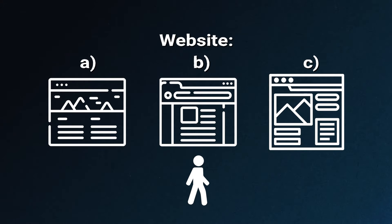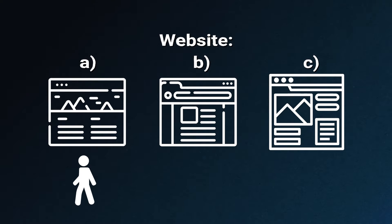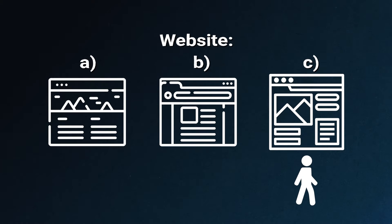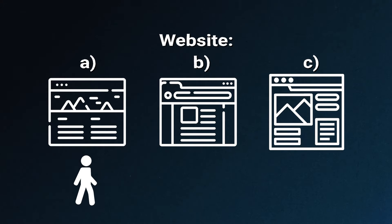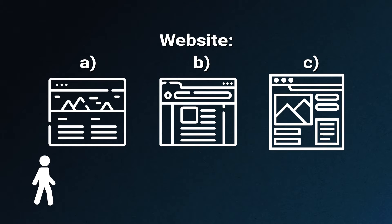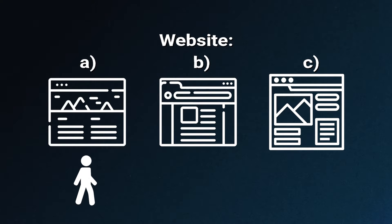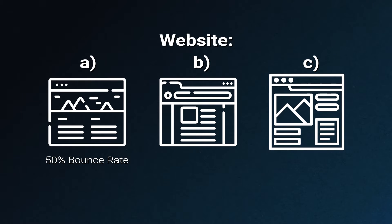Let's continue with our example. On Tuesday, a visitor landed on page B, then went to page A, then page C, and exited the website. On Wednesday, another session came in where the visitor visited page A and then exited the website. So what is the bounce rate for the different pages? Page A had two entrances — Monday and Wednesday — and only the Wednesday visit resulted in a bounce, so the bounce rate is one divided by two, or 50%.